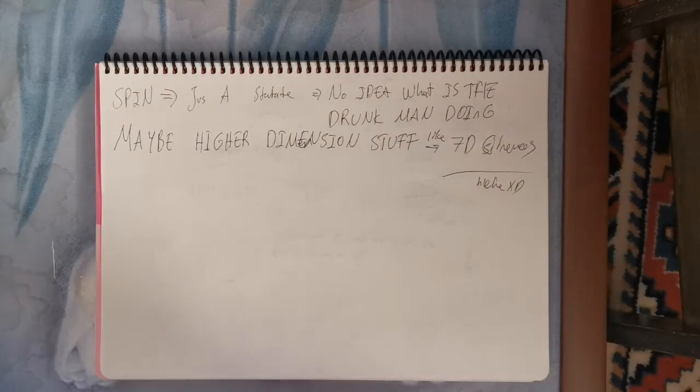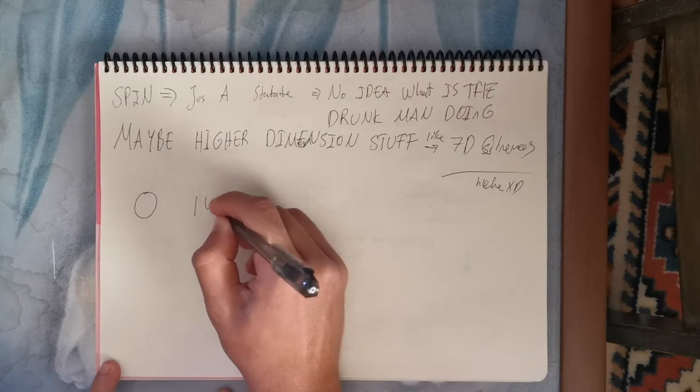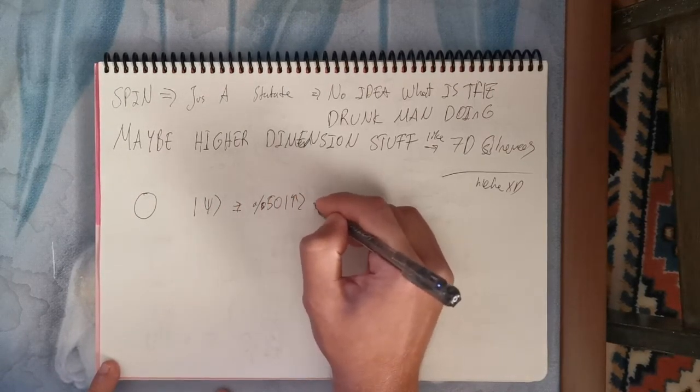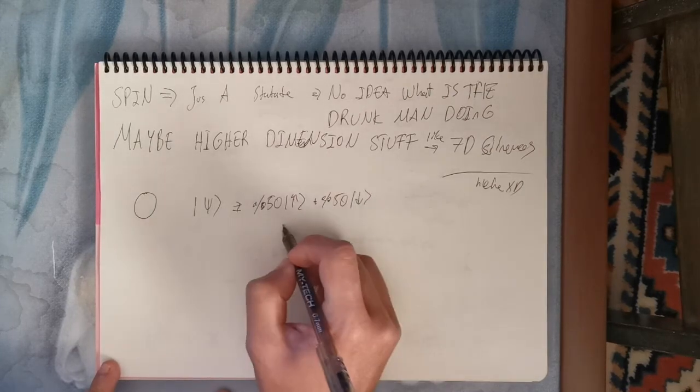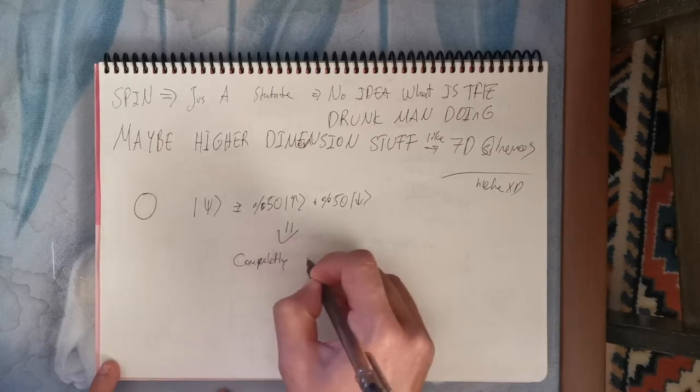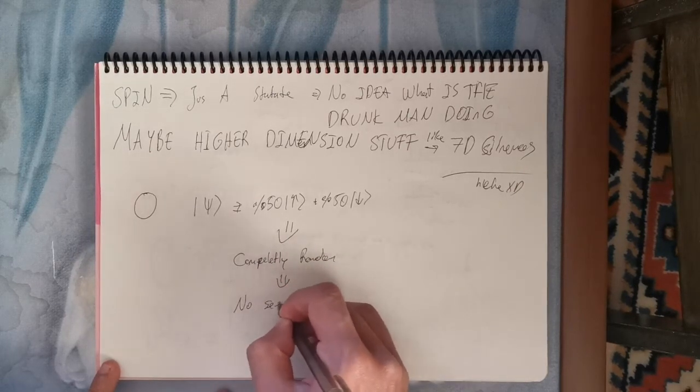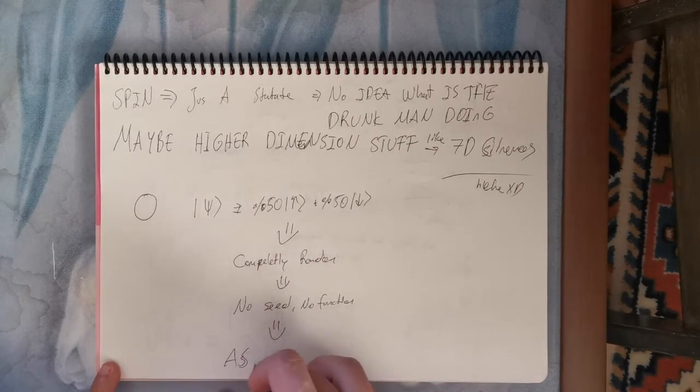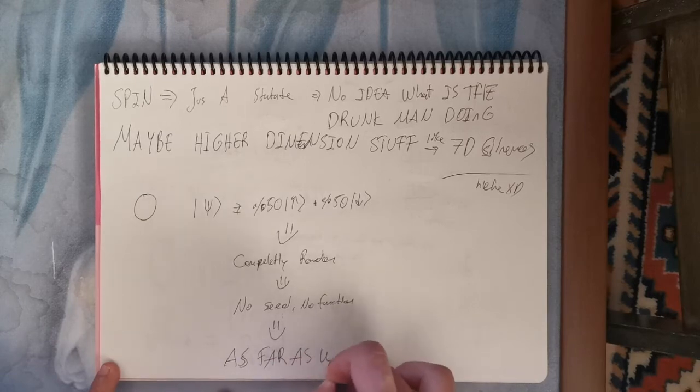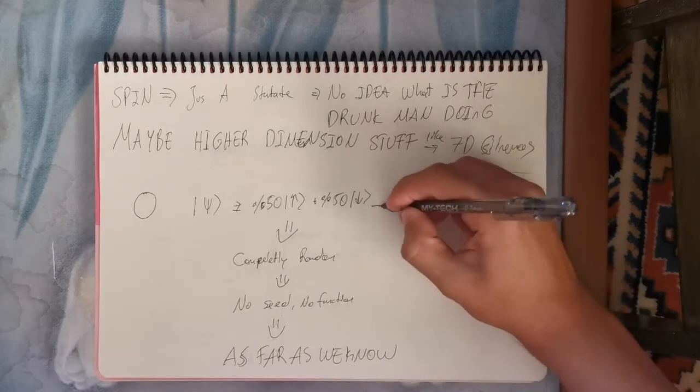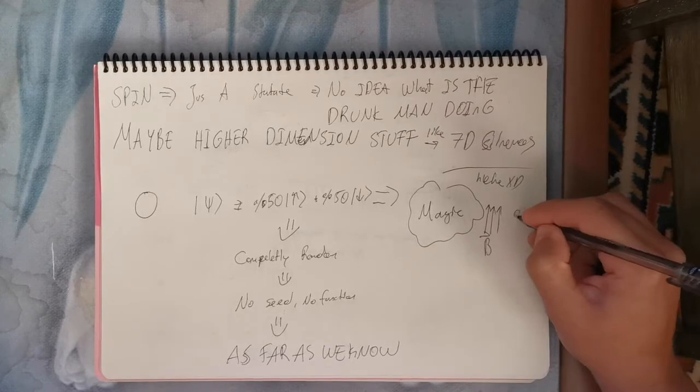So let's say we have a particle with 50% up and 50% down state. This is completely random. And if we take, like, let's say a billion of those particles, about 50% will be up and 50% will be down. And there's no way, as far as we know, which state a single particle will be in. It's completely random, as far as we know. No function, no seeds to know what the state will be in.